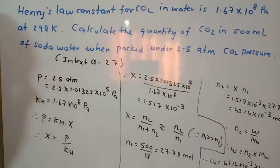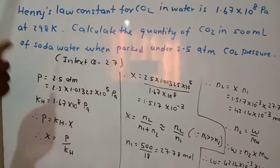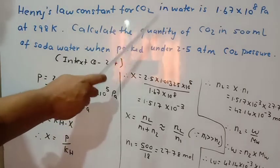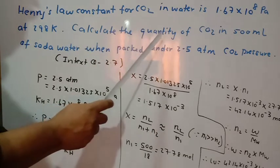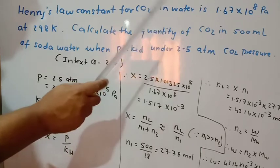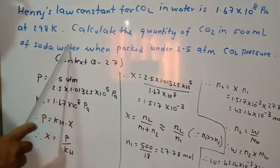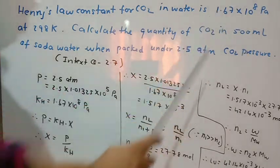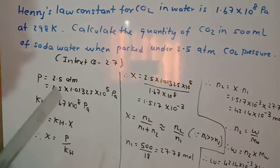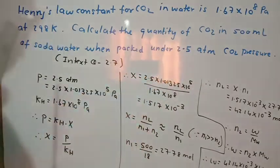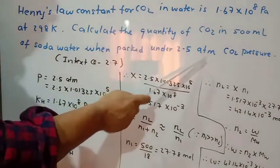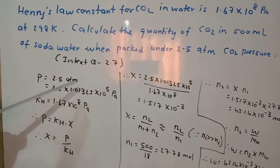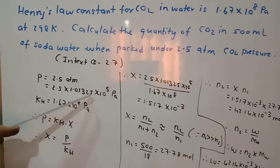Now in-text question 2.7: Henry's law constant for CO2 in water is 1.67 × 10⁸ Pa at 298 K. Calculate the quantity of CO2 — meaning we need to find the mass — in 500 mL of soda water when packed under 2.5 atm CO2 pressure. Note that pressure is given in atm and KH is in pascal, so we must convert: P = 2.5 atm × 1.01325 × 10⁵ Pa/atm.